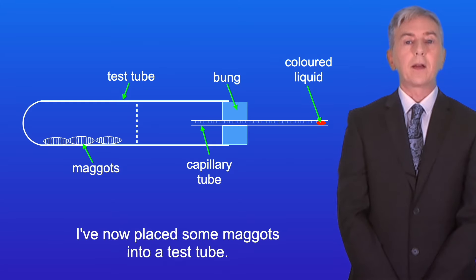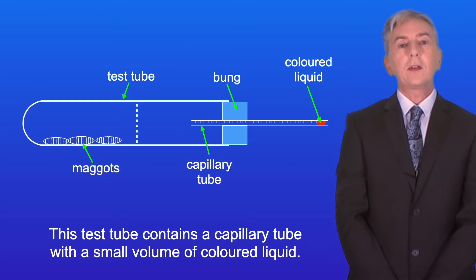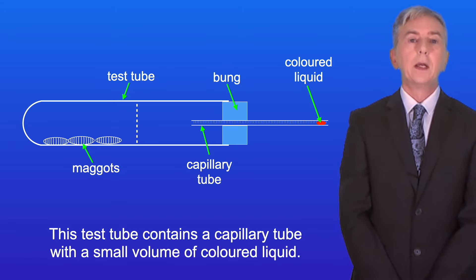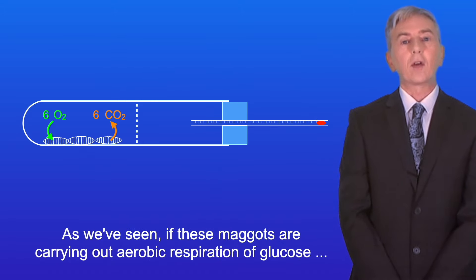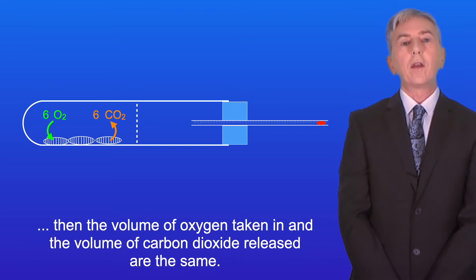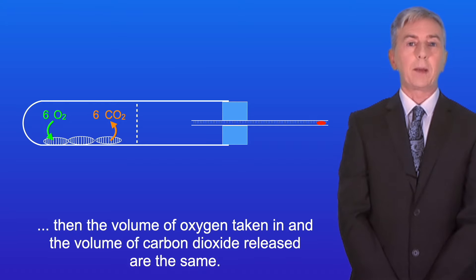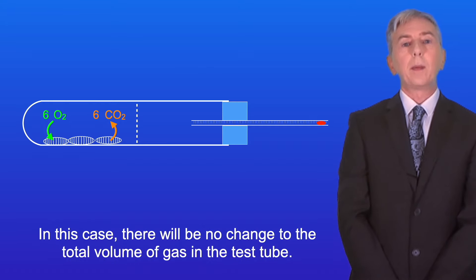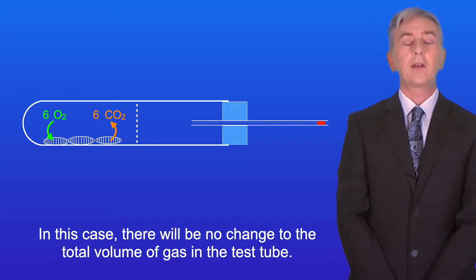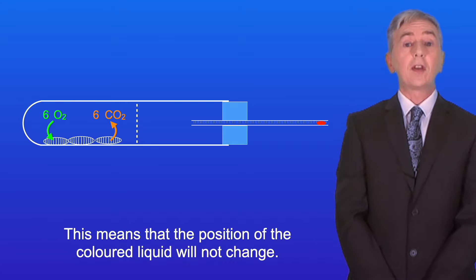I've now placed some maggots into a test tube. This test tube contains a capillary tube with a small volume of coloured liquid. So as we've seen, if these maggots are carrying out aerobic respiration of glucose, then the volume of oxygen taken in and the volume of carbon dioxide released are the same. So in this case there will be no change to the total volume of gas in the test tube, and this means that the position of the coloured liquid will not change.